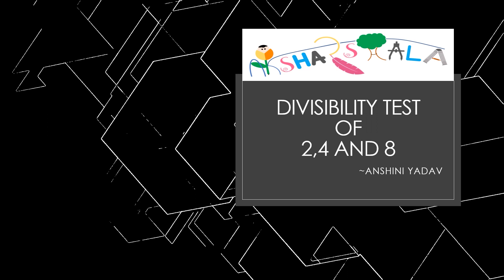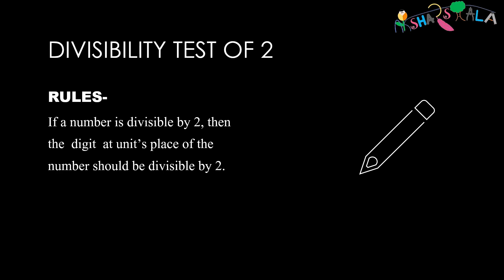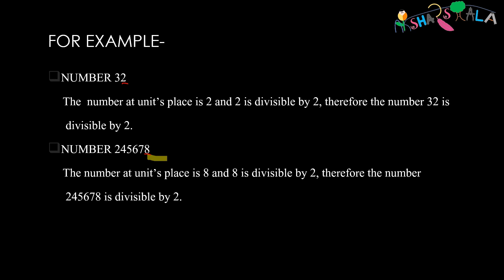Today we are going to learn the divisibility tests of 2, 4 and 8. Starting with divisibility tests of 2, the rule says that for a number to be divisible by 2, the digit at units place of that number should be divisible by 2. For example, we take the number 32. The number at units place of 32 is 2. Therefore, we can say that 32 is divisible by 2.